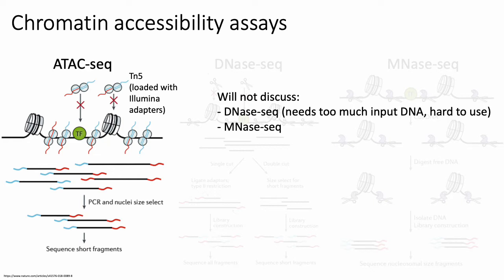In contrast, DNase-seq typically needs hundreds of thousands of cells as input, the protocol takes multiple days, and in practice there are relatively few research labs around the world that can do DNase-seq reliably. So ATAC-seq is just much more accessible.